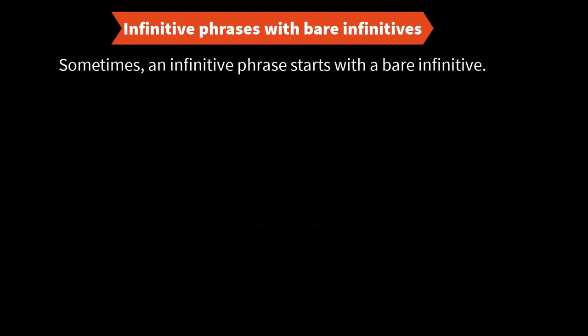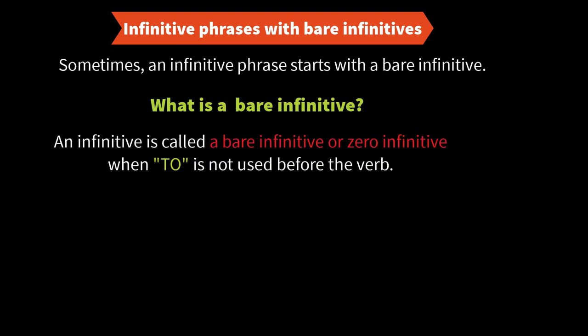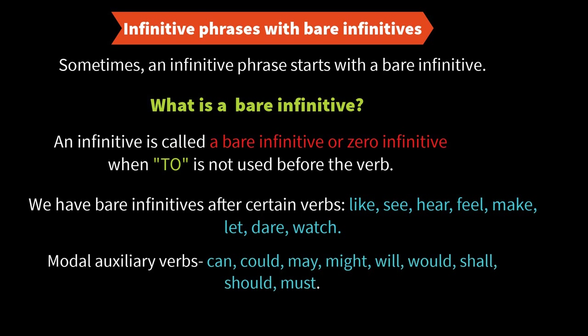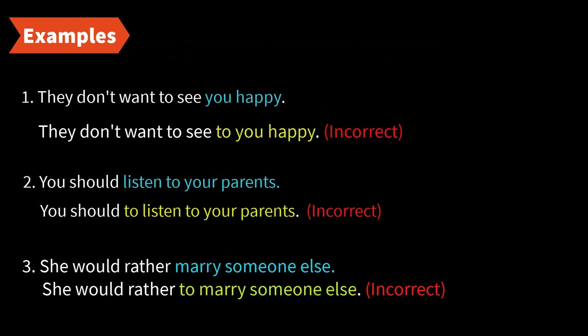A very important point: infinitive phrases can also have bare infinitives. A bare infinitive, or zero infinitive, is when 'to' is not used before the verb. We use bare infinitives after certain verbs like verbs of perception — see, hear, feel — and other verbs like 'make' and 'let.' We also use bare infinitives after modal auxiliary verbs like can, could, may, might, should, and would, as well as after verbal expressions like 'would rather' and 'had better.' On your screen are some examples of infinitive phrases with bare infinitives.